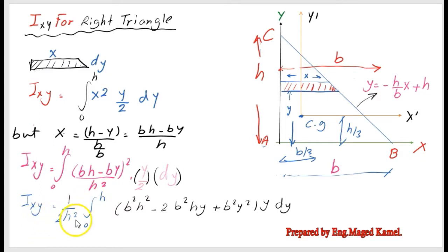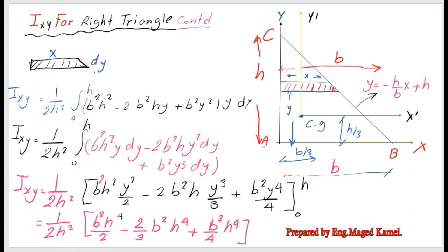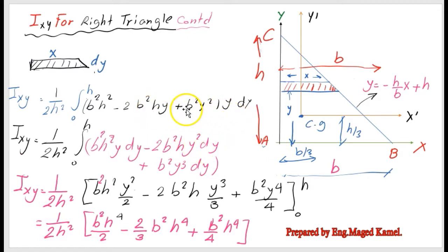Then Ixy equals 1/(2h²) — treating it as a constant — multiplied by the integration from 0 to h of (b²h² - 2b²hy + b²y²) multiplied by y·dy. Expanding further, the integrand becomes b²h²·y - 2b²h·y² + b²y³ inside the brackets, all multiplied by dy.